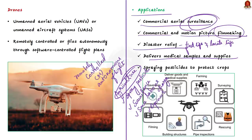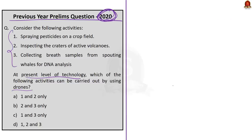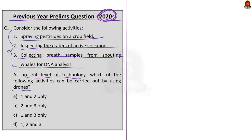Now let us crack the 2020 UPSC question. Three activities are given: first, spraying pesticides on a crop field; second, inspecting the crater of active volcanoes; third, collecting breath samples from spouting whales for DNA analysis. Statement one is correct because, as discussed, drones are used in spraying pesticides on fields, which reduces farmers' exposure to chemicals and prevents health issues.